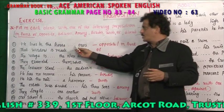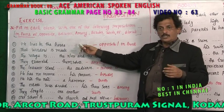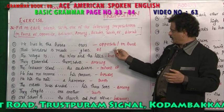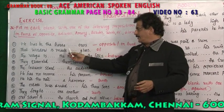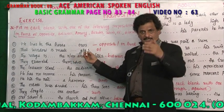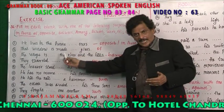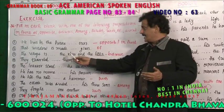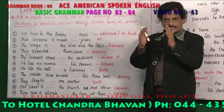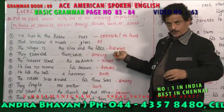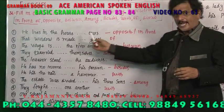Now reviewing the answers: 'He lives in the house dash his office' — opposite or in front of his office. 'That window is made dash glass' — of glass. 'The village is dash the river and the hills' — the village is between the river and the hills.